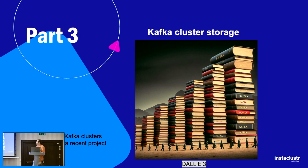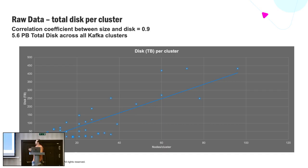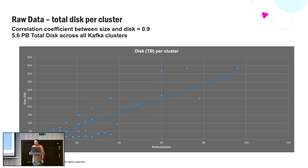Part three — we're looking at storage capacity for all the Kafka clusters we run. This data became available from an internal project that needed to understand disk usage across all clusters, and I piggybacked on that information. The raw data shows total disk per cluster in terabytes on the y-axis versus number of nodes on the x-axis. There's quite a good correlation between cluster size and disk size, which is expected. We've got about 5.6 petabytes of disk across all Kafka clusters — quite a bit of data.